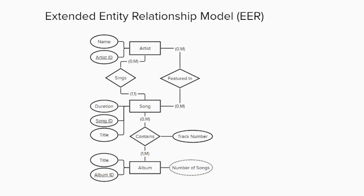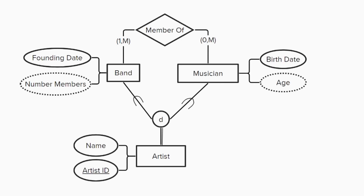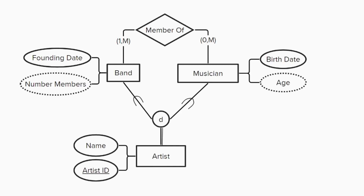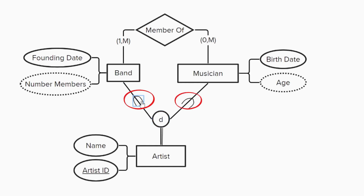The first new feature that will be introduced is the Specialization Circle, which allows us to split entities into different subtypes. For example, an artist could be a band or a solo musician as shown here. The band and musician entities split off from the Specialization Circle to indicate that each is a subtype, as indicated by the subset symbol along each line drawn to the circle.